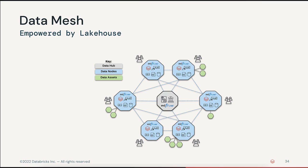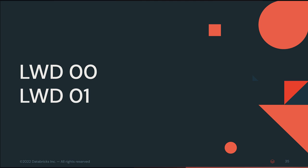Now that we have a conceptual idea of how our Lake House is designed, let's switch over to the platform and begin to code it up. We'll start by importing the notebooks used for our code. Whenever you see a slide with the letters LWD followed by a number, we're about to go over into the Databricks platform. If you want to get ahead, you can open up the notebook with the corresponding letters and numbers — for example, notebook LWD 01.